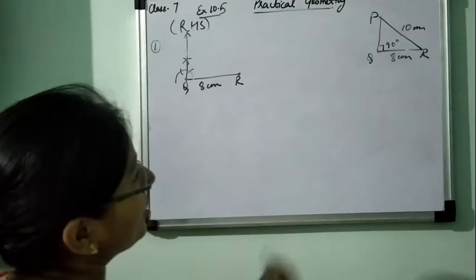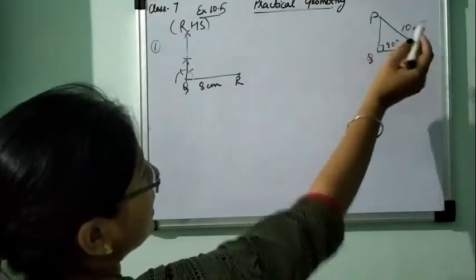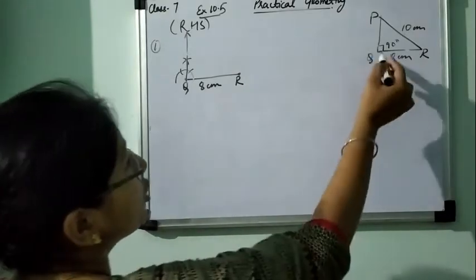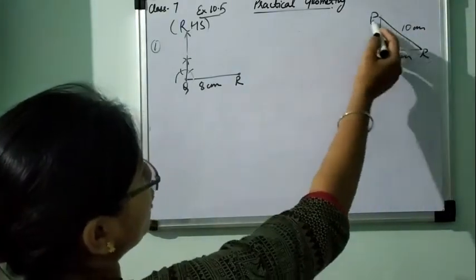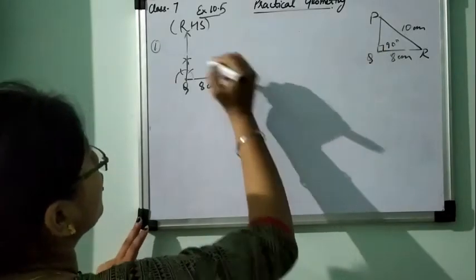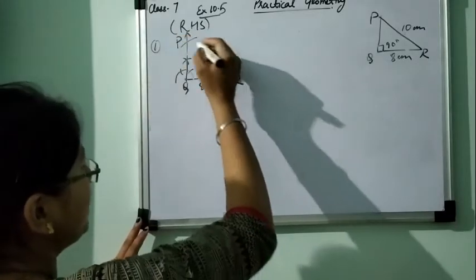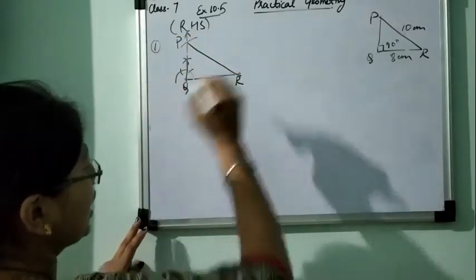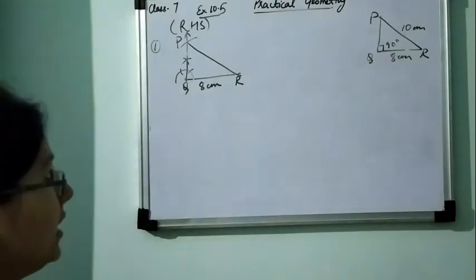Now from R, Q pe bhi ban gaya. R se P tak ki distance kitni hai? 10. Q se P ki distance we don't know. So from R, cut an arc of 10 cm at P. Then join PR. Triangle PQR is the required triangle.